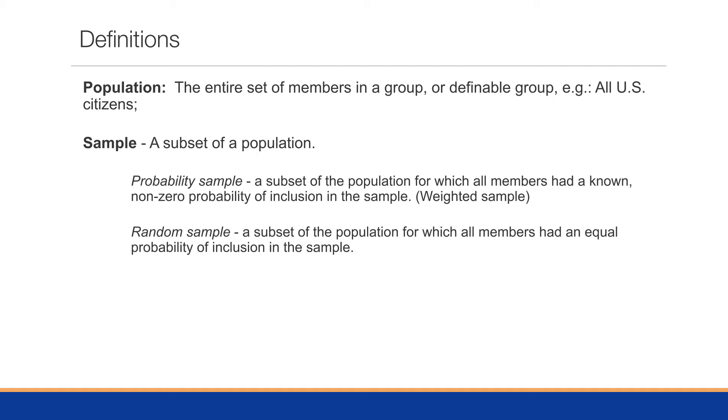A pure random sample is a subset of the population for which all members had an equal probability of inclusion in the sample.